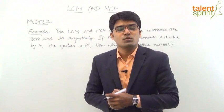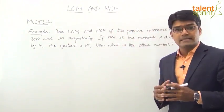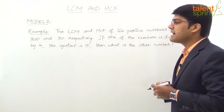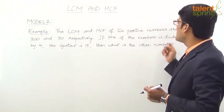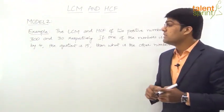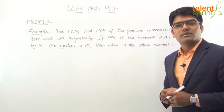So let's discuss Model 2 based on one example. The question is: LCM and HCF of two positive numbers are 300 and 30 respectively. If one of the numbers is divided by 4, the quotient is 15. Then what is the other number?